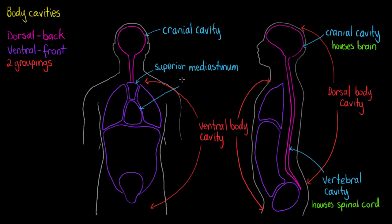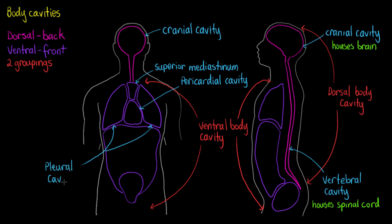We also have our pericardial cavity, which is going to house the heart, and we're also going to have the pleural cavities, which are these two on the outer sides here. Both are known as the pleural cavities and they're going to house your lungs. So the pericardial cavity is housing the heart.